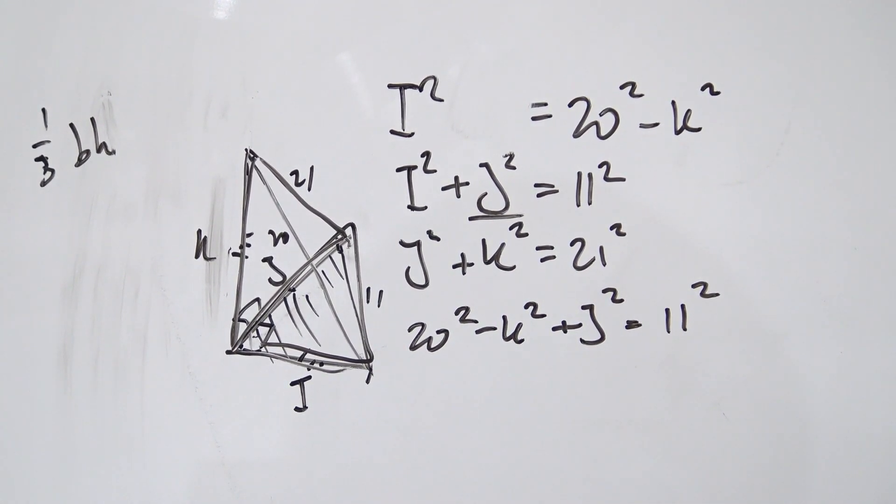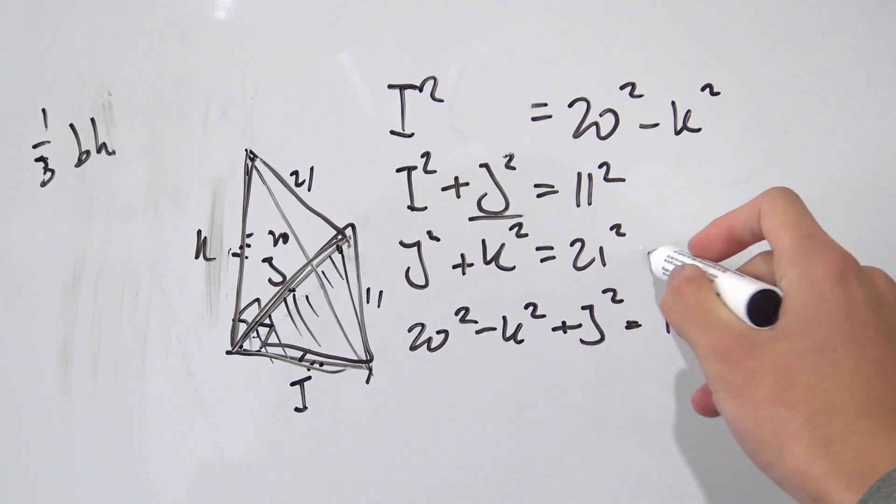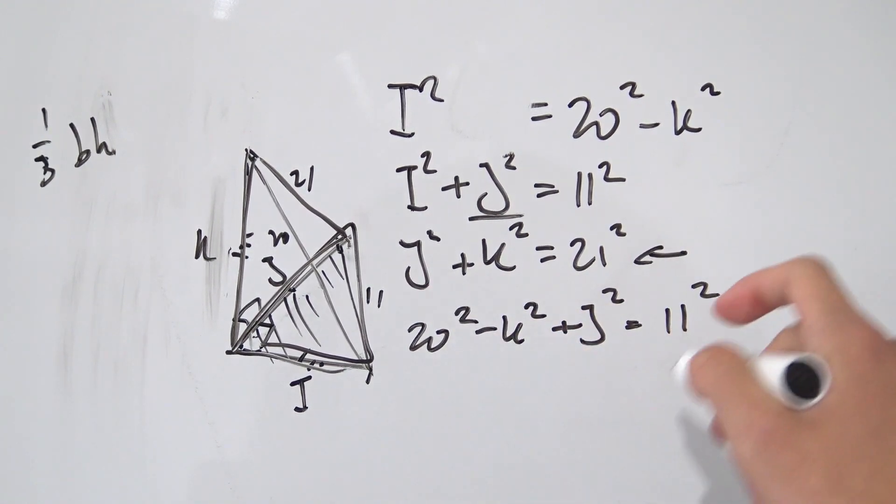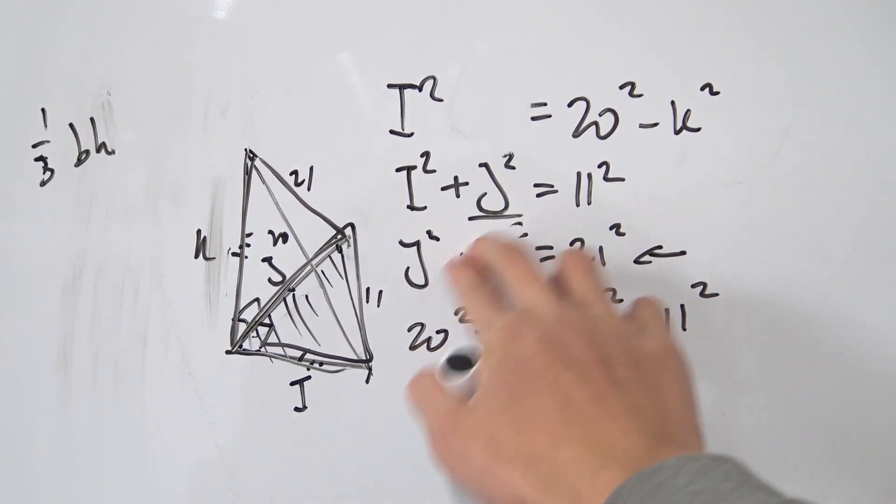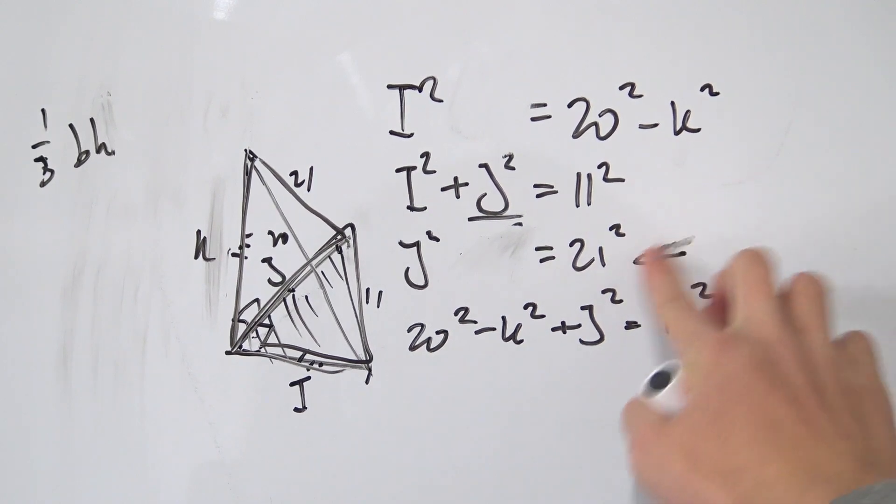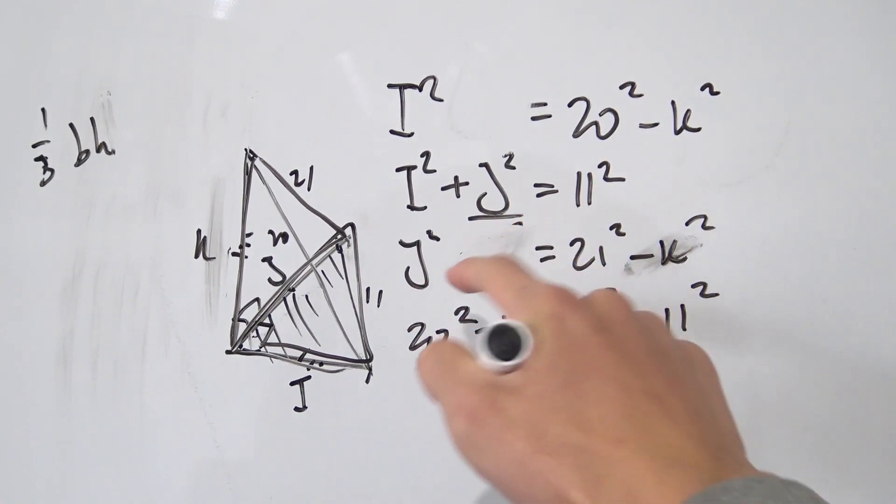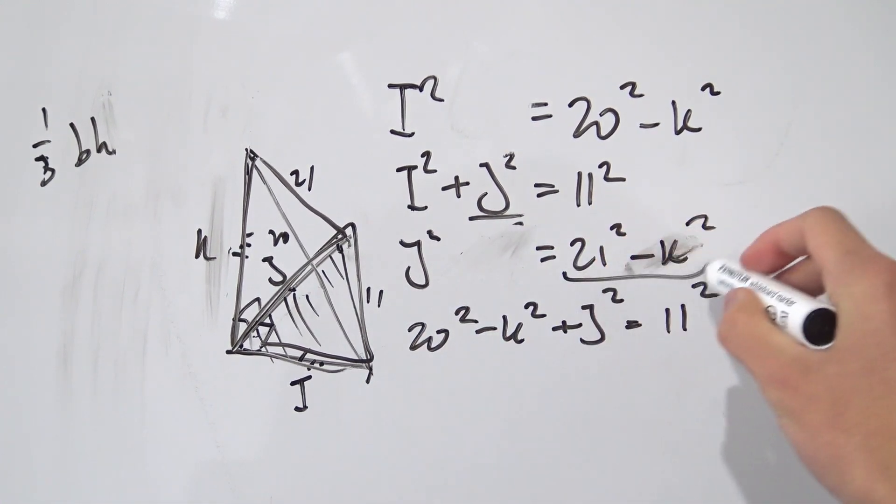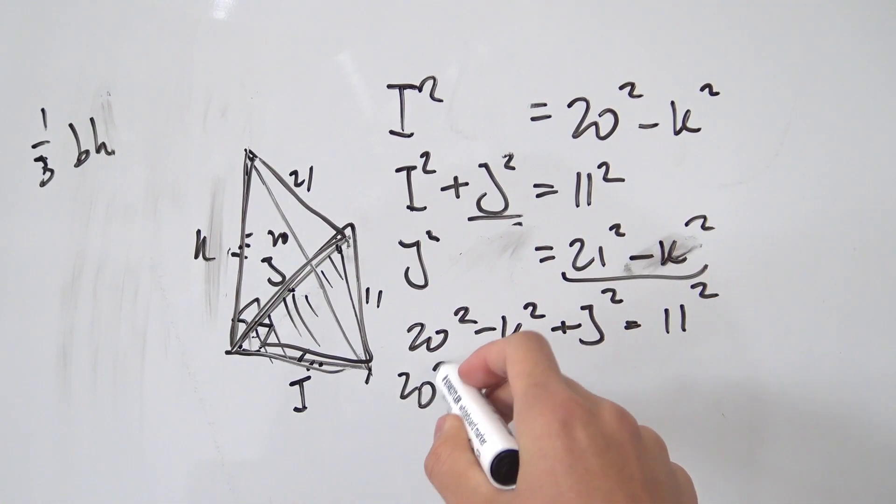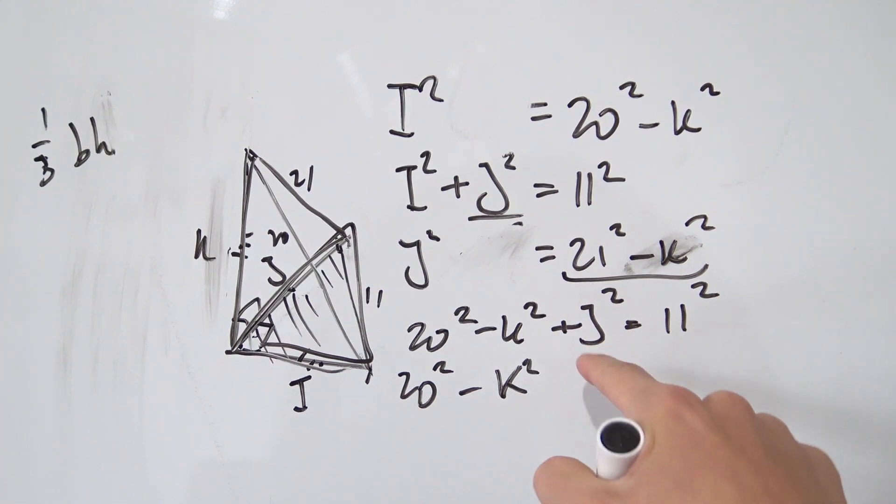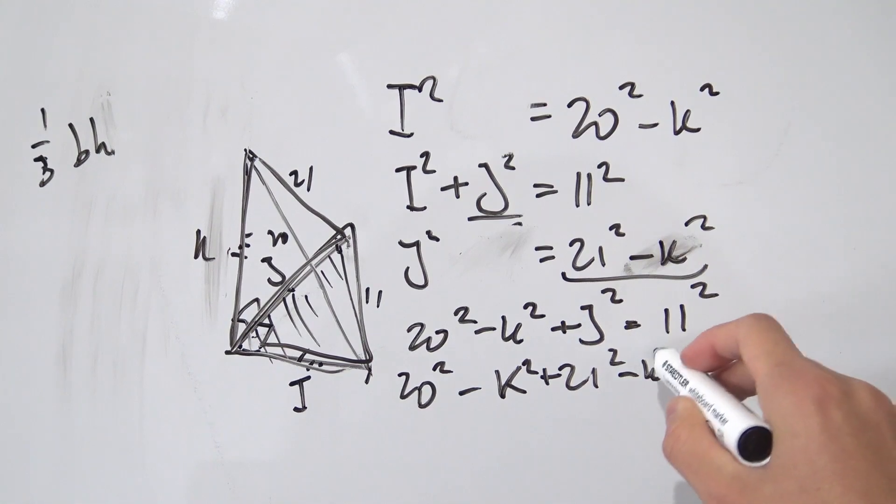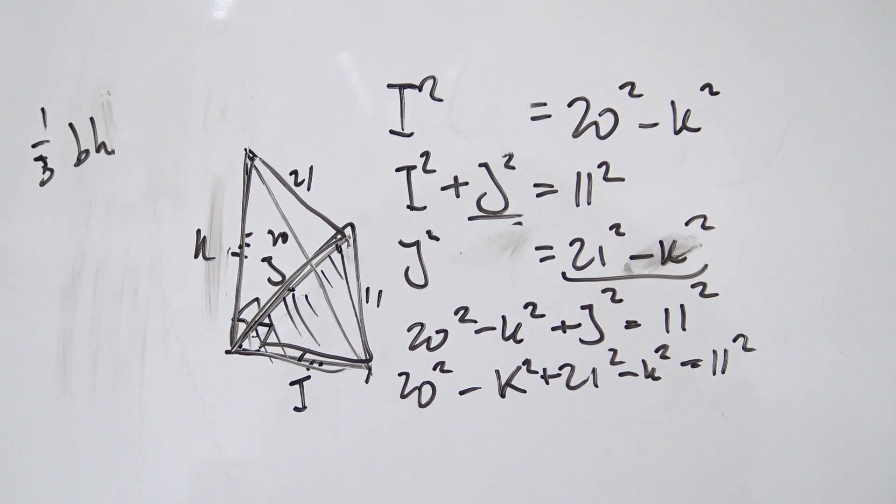Okay, what else can we do right here? Notice that this equation, it has only J's and K's in it. And we also have this third equation with J's and K's in it. So why not rearrange this third equation a little bit? Let's move the K onto the other side. So we're going to have 21 squared minus K squared. So now we can substitute J squared for this junk right here. So we're going to have 20 squared minus K squared. And then J squared is nothing but plus 21 squared minus K squared being equal to 11 squared.